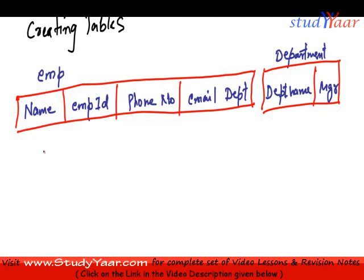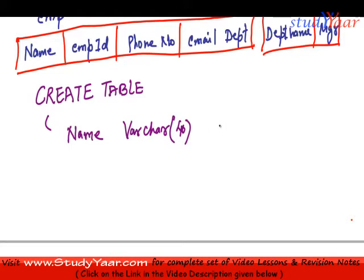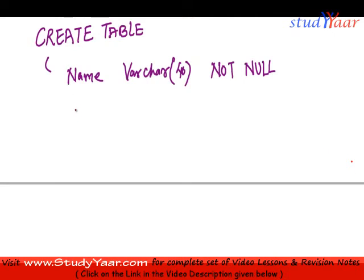The keyword to create a table is CREATE TABLE — that's very obvious. I would say CREATE TABLE and then start specifying my attributes. My first attribute is name, and I would give its domain as VARCHAR(40). I can also specify constraints, so I would say name is NOT NULL, which means a null value on name is not allowed.